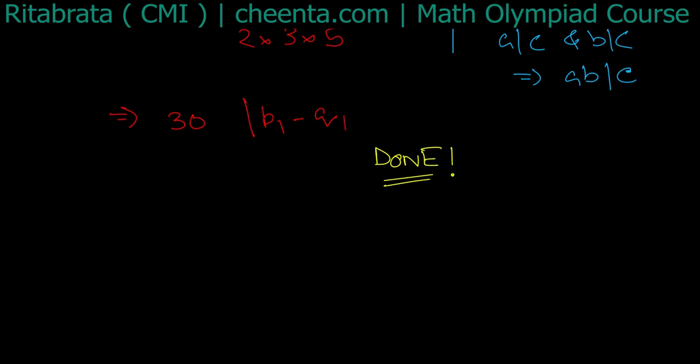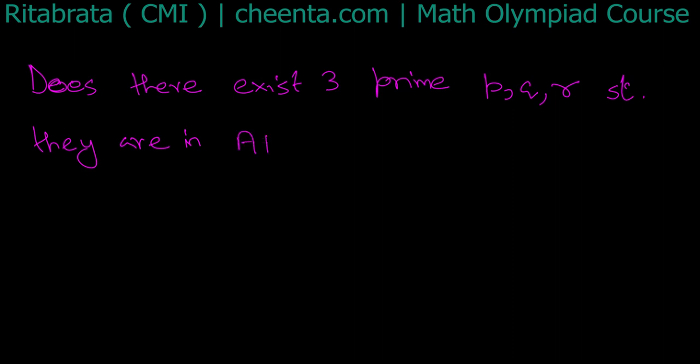As I have promised, I will tell you a similar problem. So the question is: does there exist 3 primes p, q, r such that they are in arithmetic progression and their common difference is less than 5?